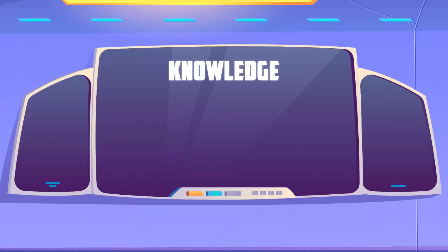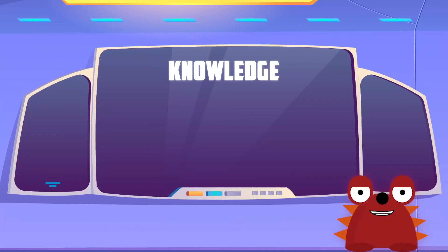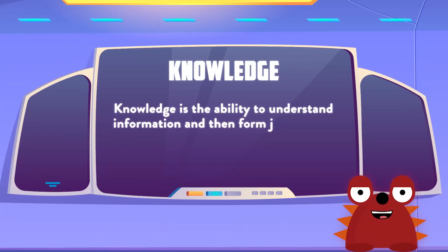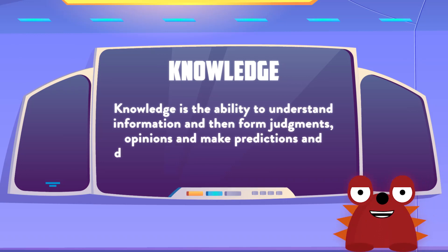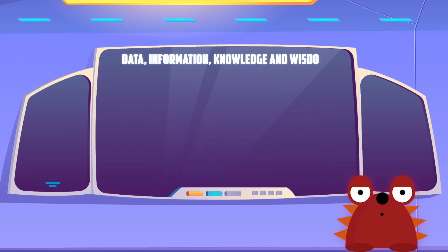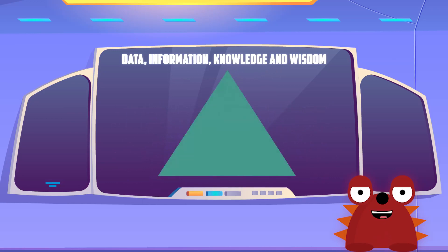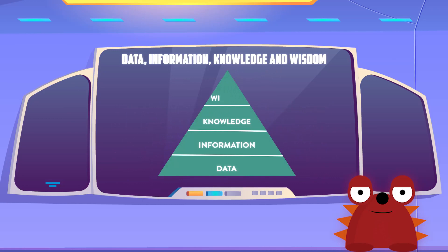Let's continue to learn about Knowledge. Knowledge is the ability to understand information and then form judgements, opinions and make predictions and decisions based on that understanding. The DIKW pyramid represents the relationships between data, information, knowledge and wisdom. First comes data, then information, next is knowledge, and finally comes wisdom. Each step answers different questions about the initial data and adds value to it.